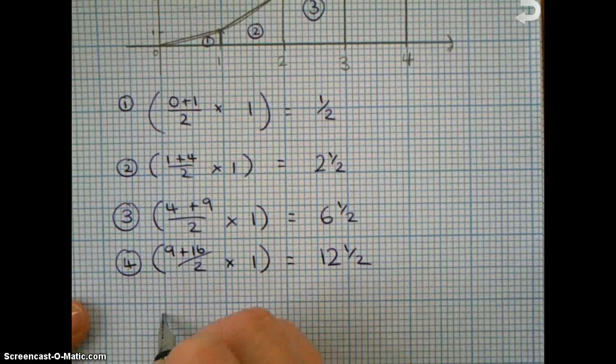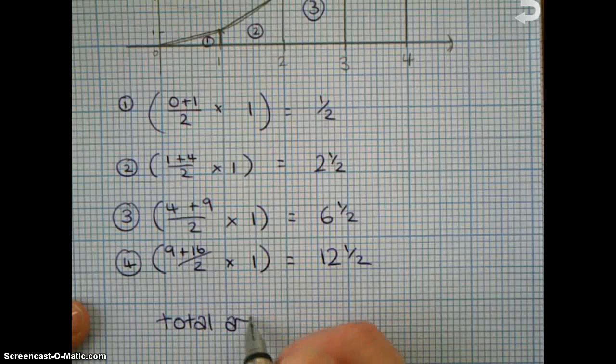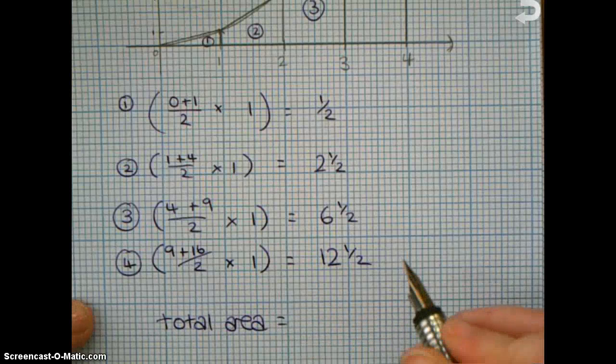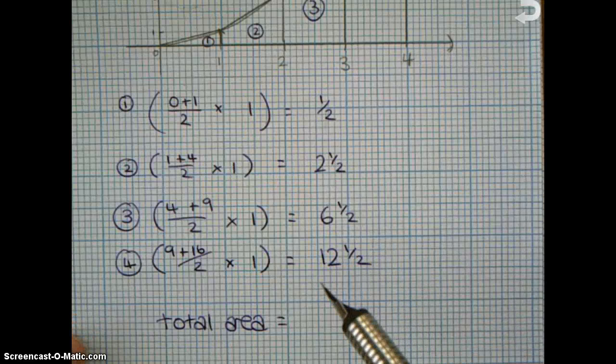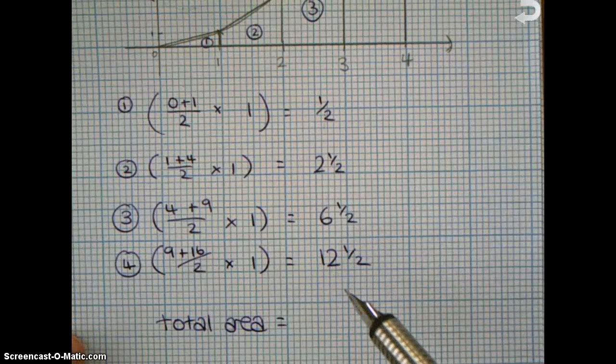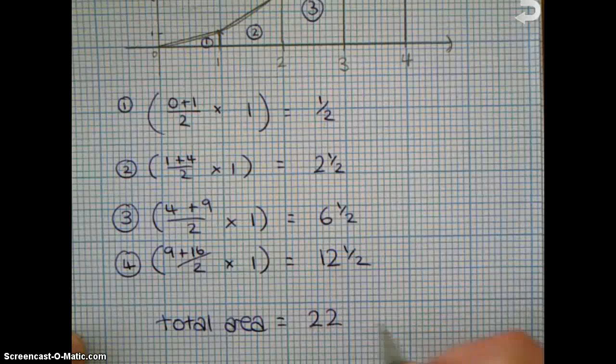And then all we do is, we'll add those all together to get the total area underneath my curve, which will be 22 units squared.